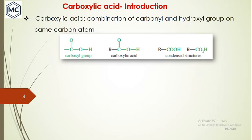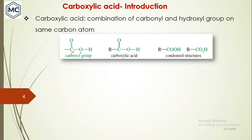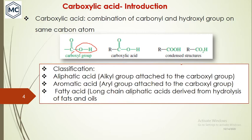Before going into the details, let us discuss the basics of carboxylic acid — what it is and how it is named. Carboxylic acid means the functional group is formed by the combination of a carbonyl and a hydroxyl group on the same carbon atom. You can see the carbonyl and hydroxyl group on the same carbon atom here. Usually an alkyl or aryl group is attached to this functional group — this is the condensed structure of carboxylic acid.